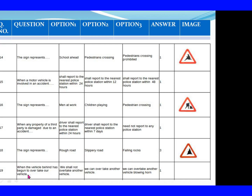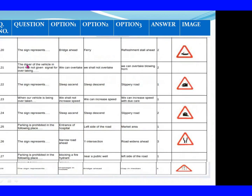Question 119: When the vehicle behind has begun to overtake our vehicle. Option 1: We shall not overtake another vehicle. Option 2: We can overtake another vehicle. Option 3: We can overtake another vehicle blowing horn. The right answer is Option 1: We shall not overtake another vehicle. Question 120: The sign represents. Option 1: Bridge ahead. Option 2: Ferry. Option 3: Refreshment stall ahead. The right answer is Option 2: Ferry.